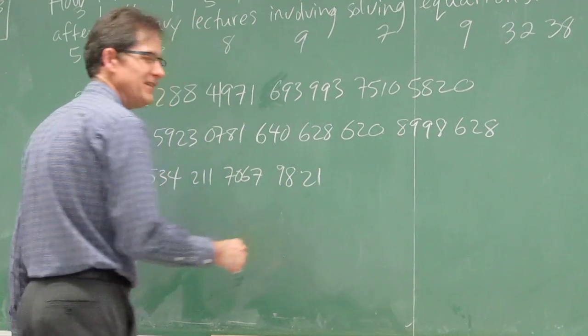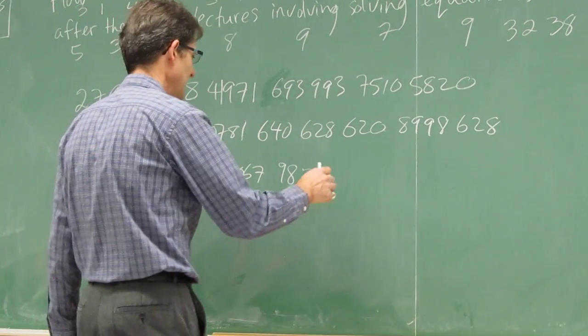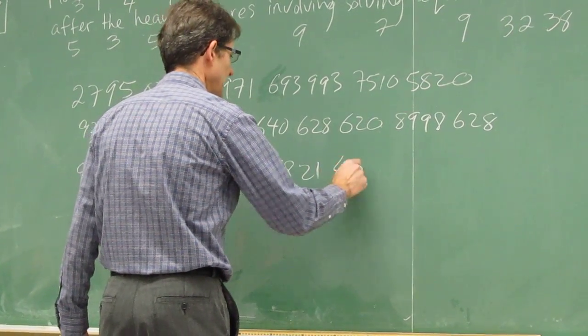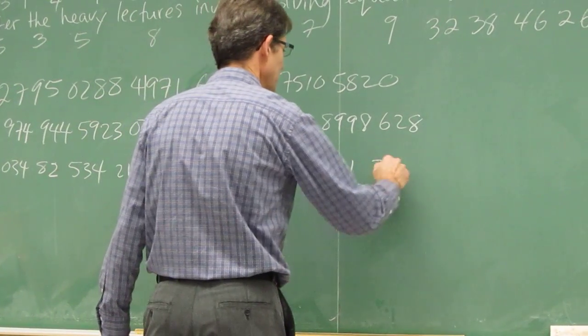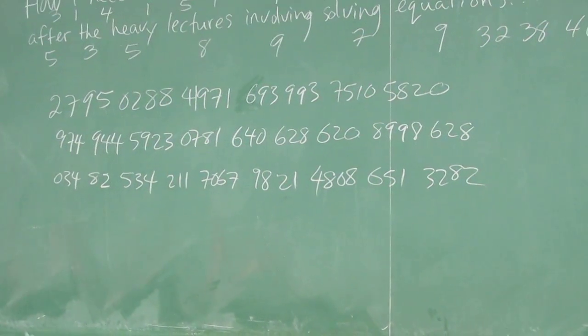Nine, eight, two, one. Is that right? Four, eight, zero, eight, six, five, one, three, two, eight, two. Is that right?